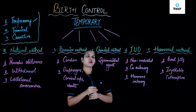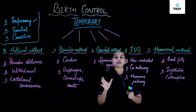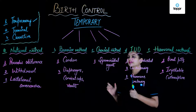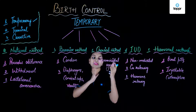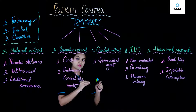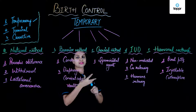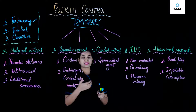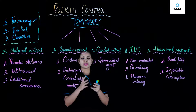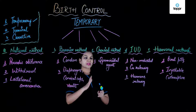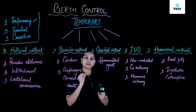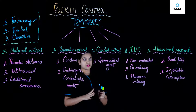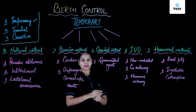Next, let's talk about chemical methods. Spermicidal agents aim to kill the sperms and can be available in the form of various things like foam, cream, or gels. Their main target is to kill the sperms present in the female genital tract.